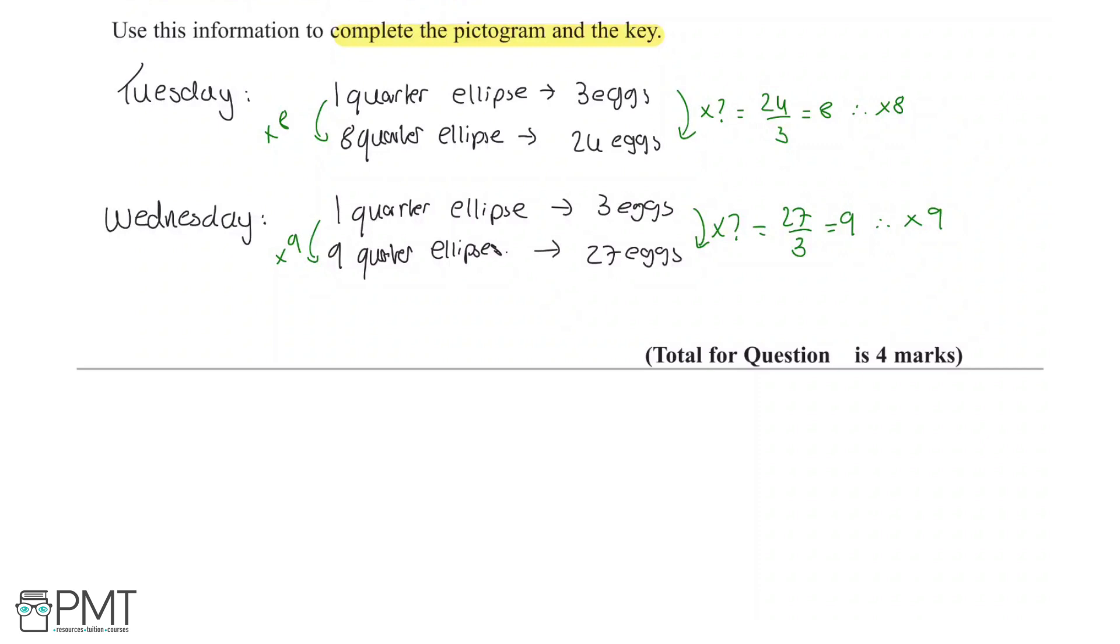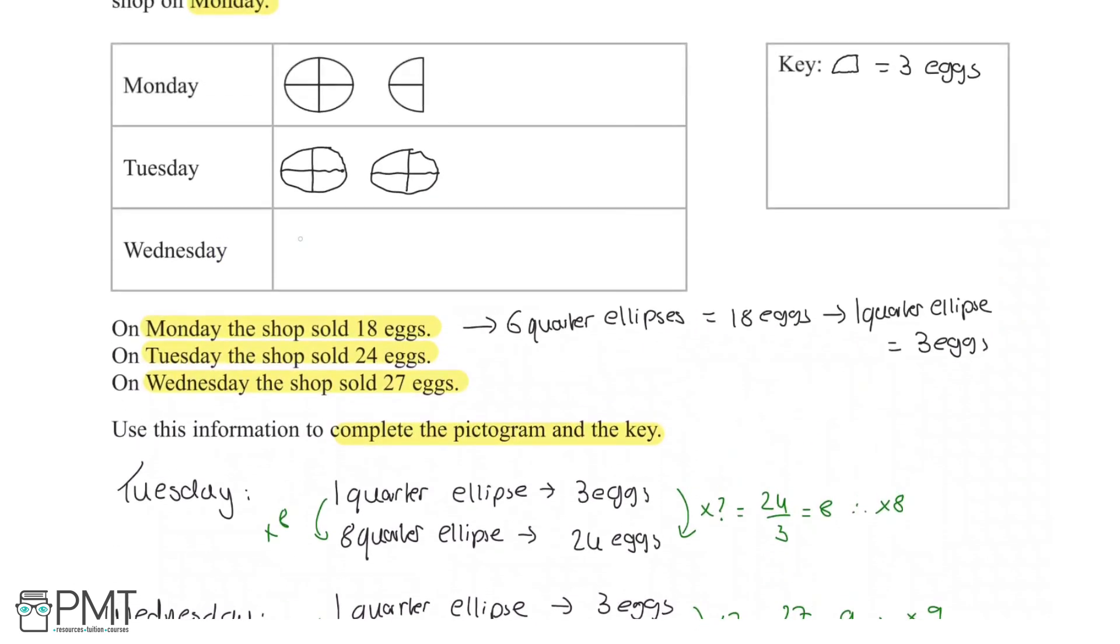Now what we will do is we will first draw 1, so we now have 4. We'll draw another one like this—8. And then we will draw one more quarter like that to form our 9 quarter ellipses.